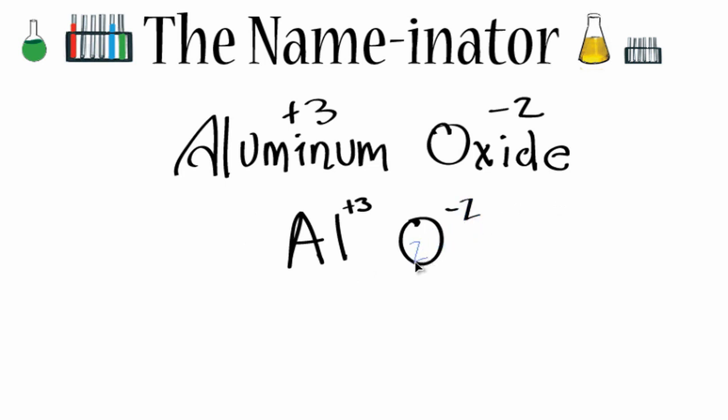I'm just going to take the 2 here and cross it over here, and then on this side I'm going to take the 3 and move it down here. And let's get rid of these charges. And that gives me Al2O3, just like I got before. So that confirms that Al2O3 is the correct formula for aluminum oxide.